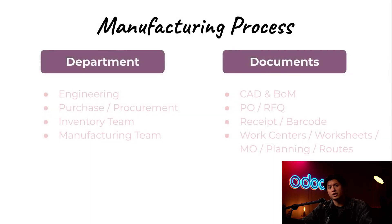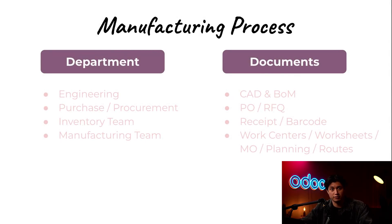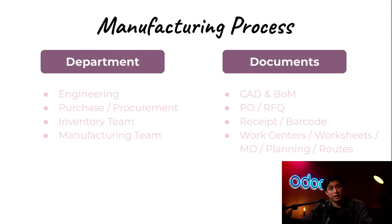So far, we've covered how manufacturing starts with product design and bill of materials, followed by checking inventory and triggering RFQs when parts are missing. When materials arrive, all products are recorded into Odoo. From there, the manufacturing app ensures components are ready, work orders are tracked, and production stays on schedule. Odoo handles everything from planning and progress tracking to real-time cost analysis, keeping operations transparent and efficient from start to finish.